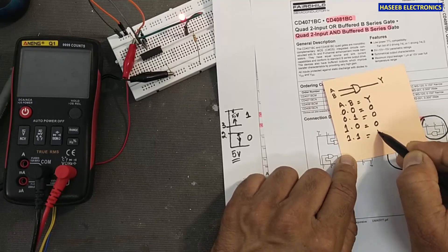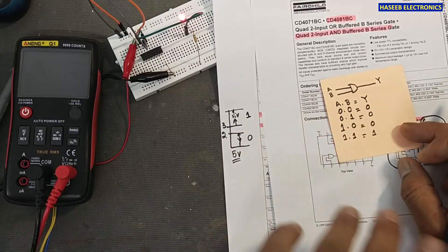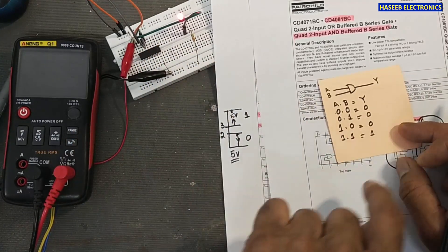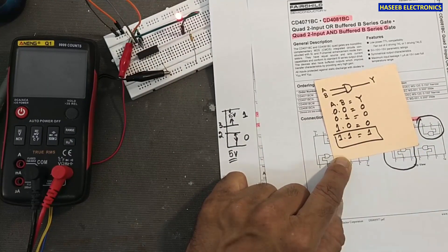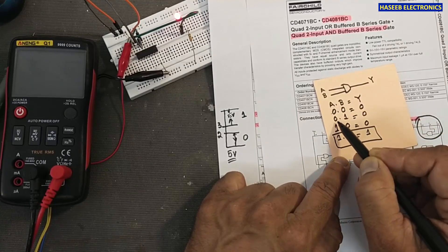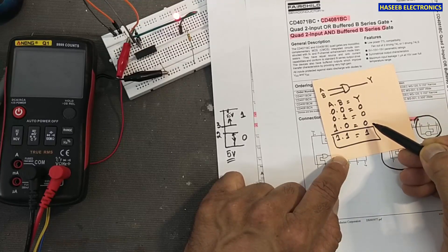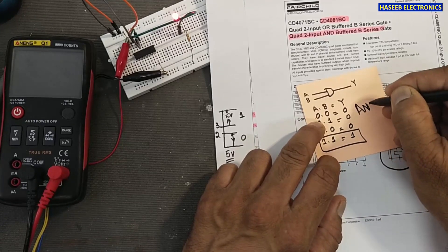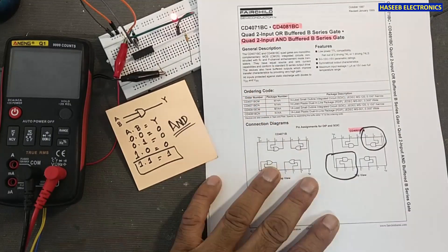If both inputs are high, 1 multiplied by 1 equals 1. This table is called the truth table. We can verify the function of this IC using this truth table. If both inputs are high, the output will be high. If any one input is low, or both inputs are low, the output will be low. This is the AND function — AND gate logic.